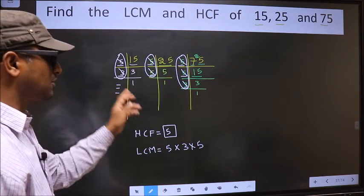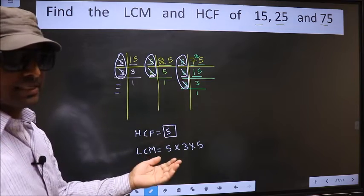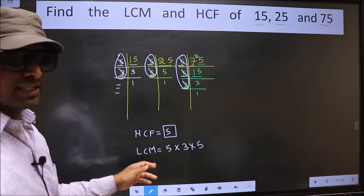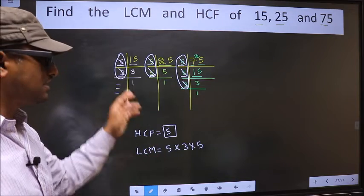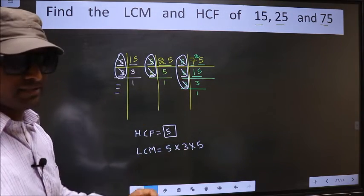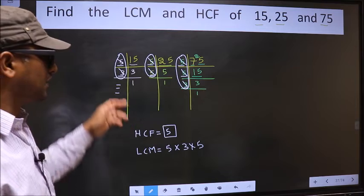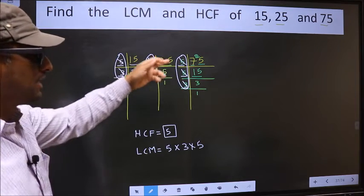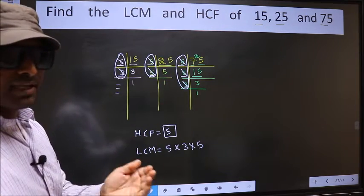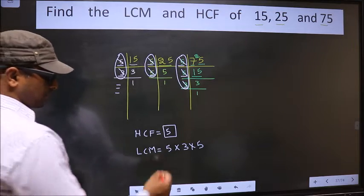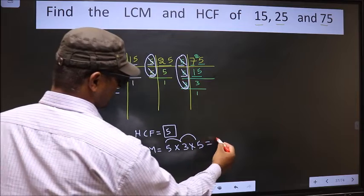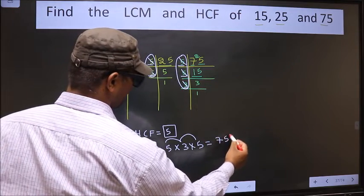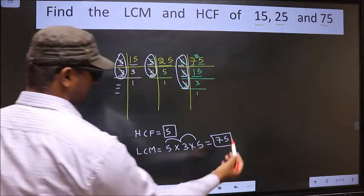For the HCF, number should be present in all the 3 places. For LCM, not like that. Even if it is present in 1 place or 2 places, still you cut and write here. Now each number has been cut. So, our LCM is 5 into 3, 15 into 5, 75 is our LCM.